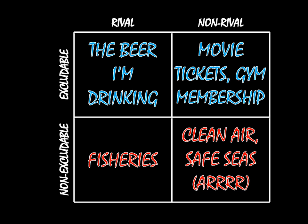And so when we talk about international relations and the consumption of goods, the issues really come in the bottom half — in these non-excludable goods, whether it's a common pool good like the fishery or a public good like clean air. What we're going to be studying in this unit is how states mitigate the problems and ensure that non-excludable goods — both common pool goods and public goods — are actually being produced and consumed. Hope you enjoyed this, and I'll see you next time. Take care.